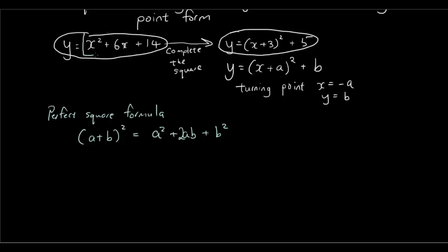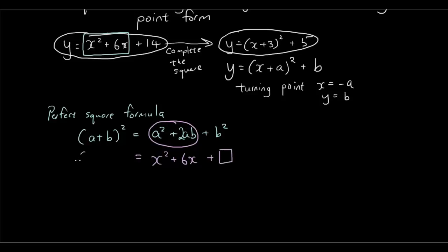Let's have a look at the first two parts of this equation. The first two terms — x squared plus 6x — match our first two terms in our perfect square formula. We just don't know what we should put in here. As you can see in our formula, a is x, so we know that it will be (x plus b) squared — we just don't know what b is.